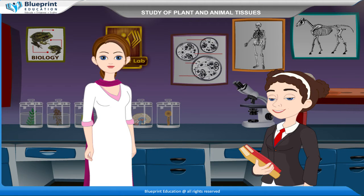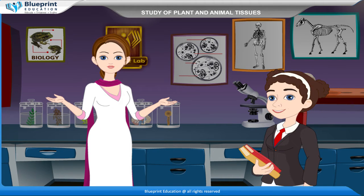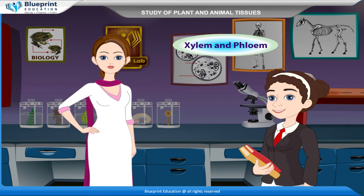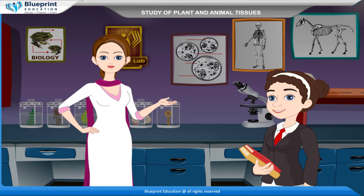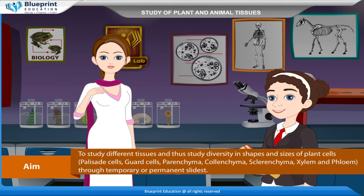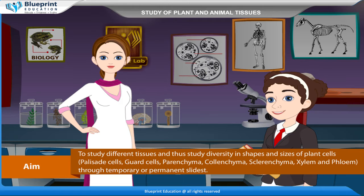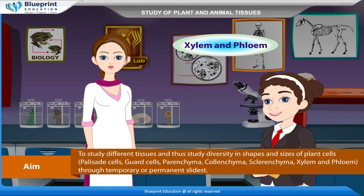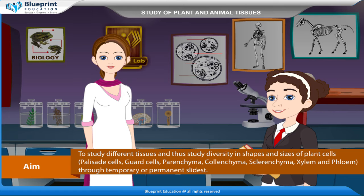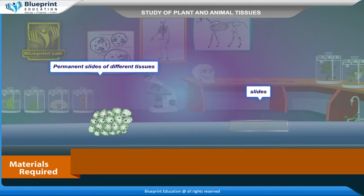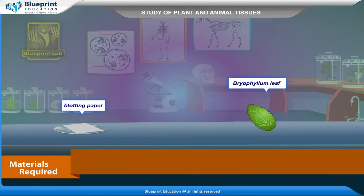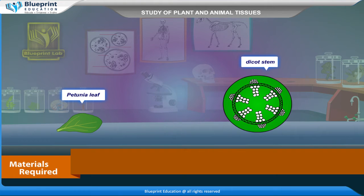The aim of this experiment is to study different tissues and thus study diversity in shapes and sizes of plant cells: palisade cells, guard cells, parenchyma, colenchyma, sclerenchyma, xylem, and phloem through temporary or permanent slides. Materials required are permanent slides of different tissues, slides, cover slips, saffranin, blotting paper, bryophyllum leaf, petunia leaf, and dicot stem.